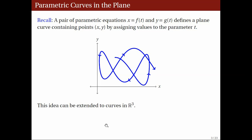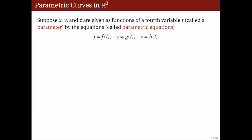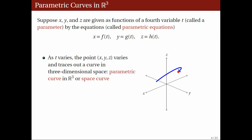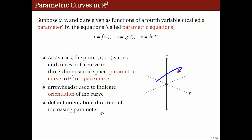We will extend this notion to curves in R3. Suppose this time that x, y, and z are given as functions of a fourth variable t, which we call a parameter, by the equations x equals f of t, y equals g of t, and z equals h of t. Then, as t varies, the ordered triple x, y, z also varies, tracing out a curve which we call a parametric curve in R3, or space curve. As in the plane case, arrowheads will be used to indicate the orientation of the curve, which by convention we set to be in the direction of increasing parameter values.